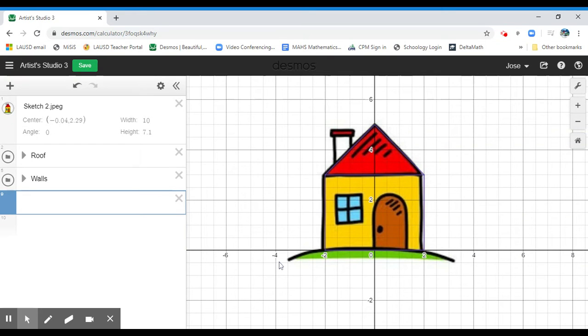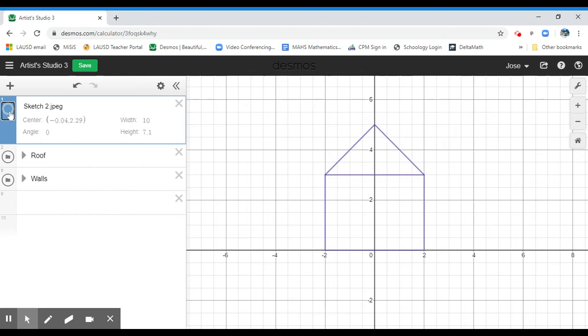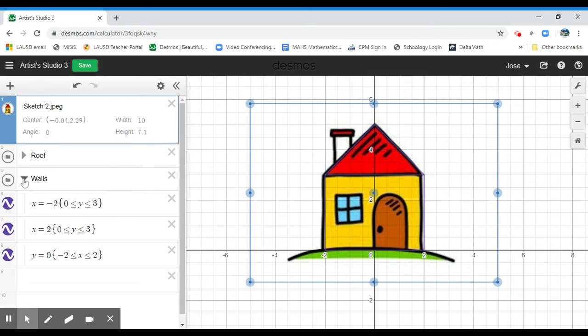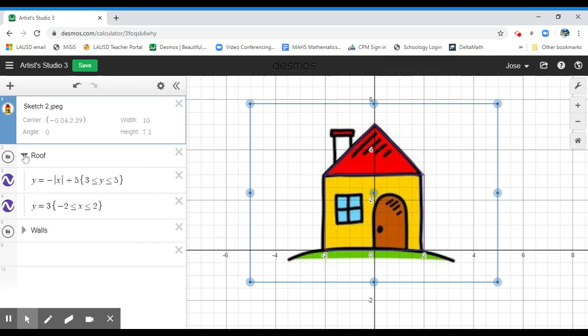We're in the last part now. We went over the first two videos already, talked about creating the roof and the sides of the walls of the sketch I created here, and also created these folders to organize my equations so they're not all over the place.